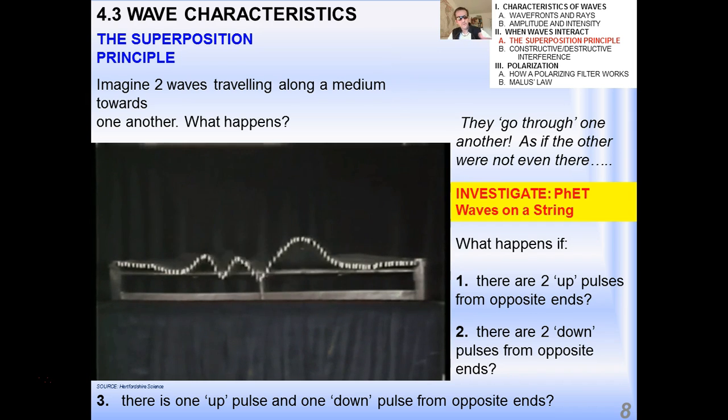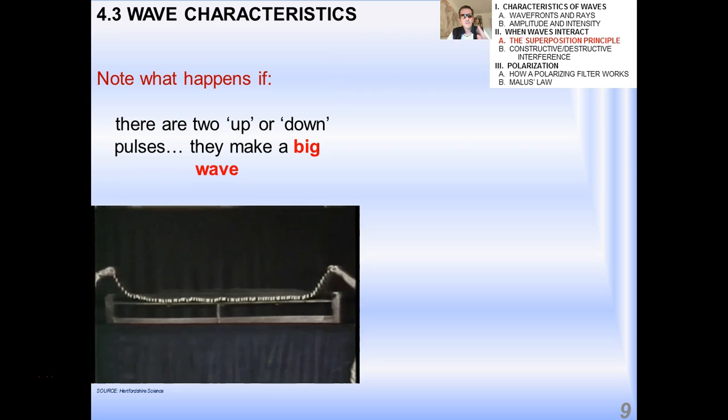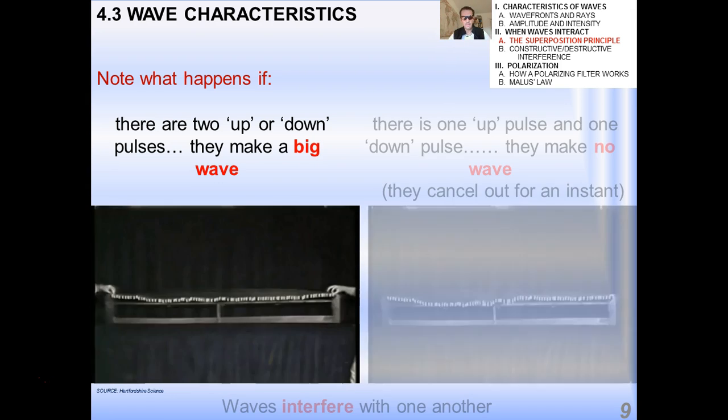Now I want you to think about what would happen if you have two up pulses or positive displacements from opposite ends or if there are two down pulses from opposite ends. Your common sense might tell you what's going to happen. I'll show you in the next slide. Alternatively, what if you have one up pulse, one positive displacement, and one negative displacement from opposite ends that are coming towards each other.